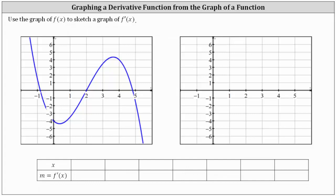We're asked to use the graph of f of x to sketch a graph of f prime of x. The derivative function values are equal to the slopes of the tangent lines to f of x at given values of x. So what we'll do is sketch several tangent lines to the graph of f of x and then estimate their slopes, which will give us estimates for the derivative function values. We will record the information in the table below, where each column gives us one point on the graph of f prime of x.